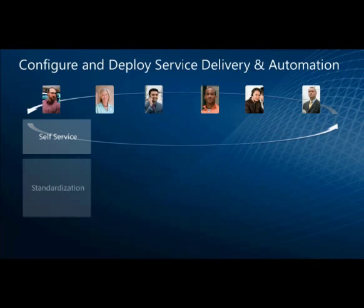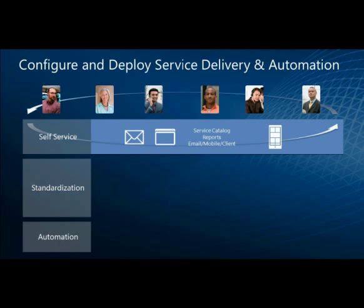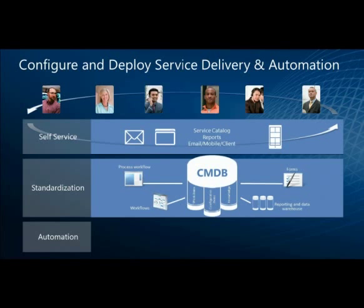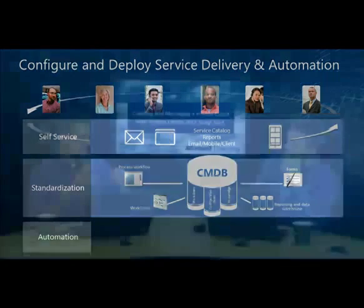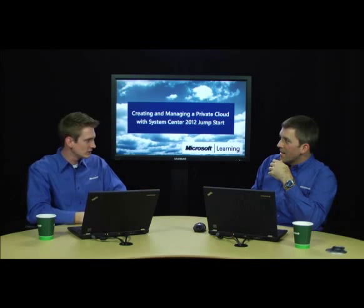Service delivery and automation comes about through several areas. With self-service, people have access to the service catalog — reintroduced as a new service catalog in System Center 2012, rewriting the original portal within Service Manager from the ground up. The service catalog is like a restaurant menu: it's a menu of services that IT offers to the business, from which consumers can pick and choose. It's fully customizable — the IT department can build and customize the offerings.